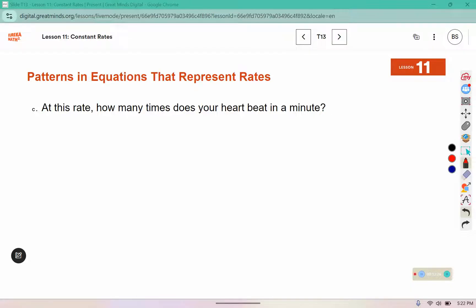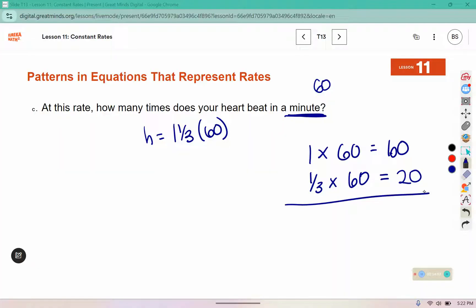At this rate, how many times does your heart beat in a minute? A minute is how many seconds? What we have is heartbeats equals 1 and 1 third times the time, and our time should be replaced with 60 seconds. Well, 1 times 60 is 60, and 1 third of 60, if I split 60 into 3 parts, that's 20. So 1 and 1 third times 60 is 60 plus 20, which is 80, which is 80 heartbeats in 1 minute.